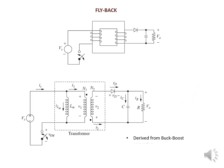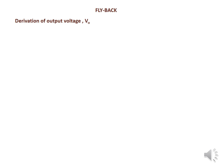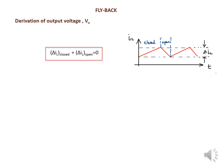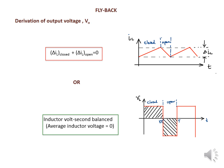The flyback converter winding resistance is derived from the buck-boost converter, with isolation provided by the high-frequency transformer. Here you can see the derivation of the output voltage V0. We write the inductor volt-second balance as: ΔiL_closed plus ΔiL_open equals zero, meaning the average inductor voltage equals zero. From this, the closed terminal is written in terms of the open terminal to derive the output voltage.